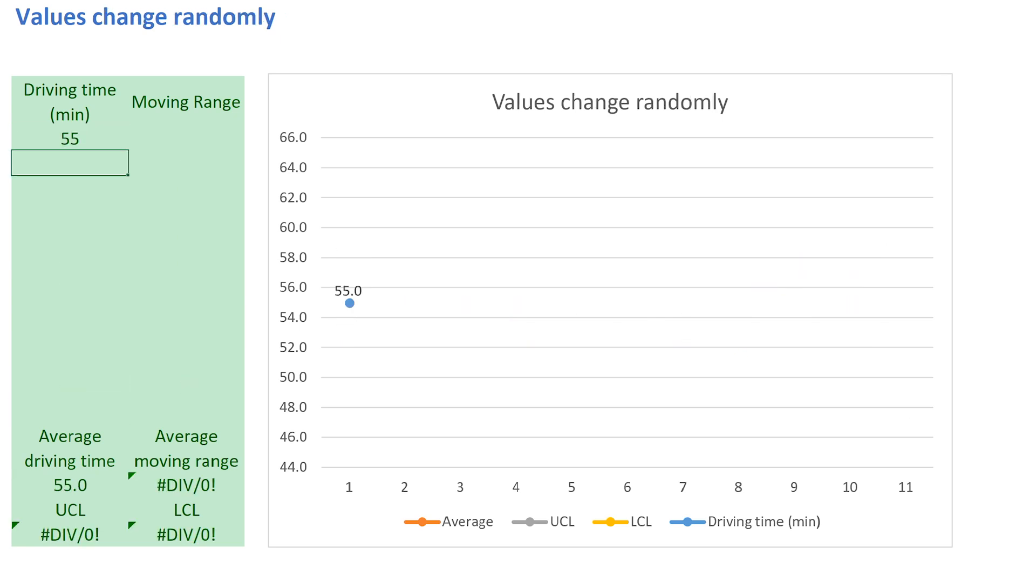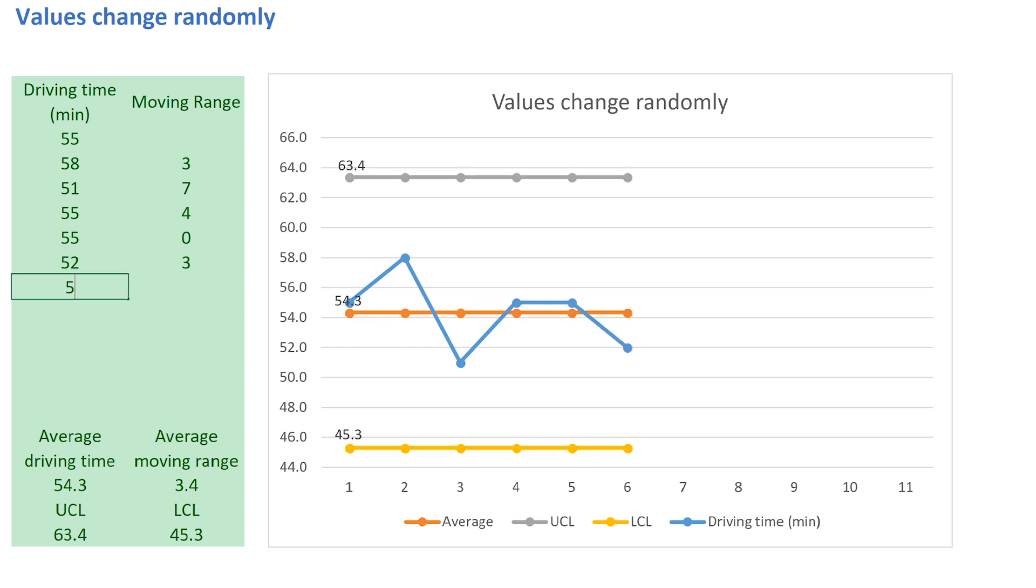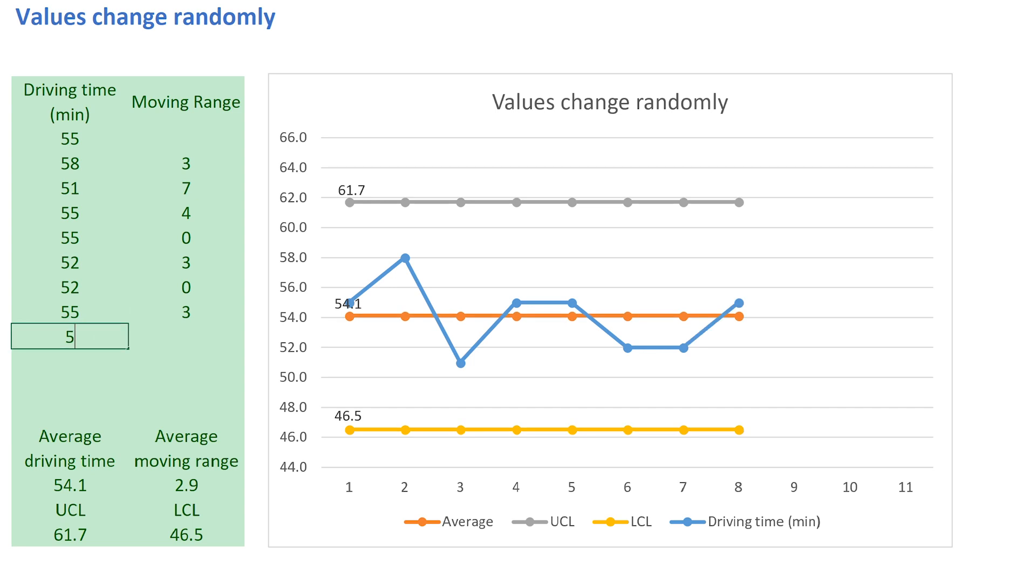In this second example, we plot values that change randomly. As we enter the values, the moving range shows jumps of random sizes from one value to the next. This results in wider control limits.